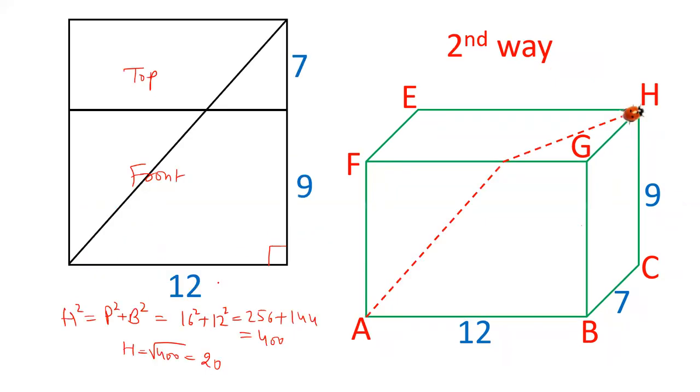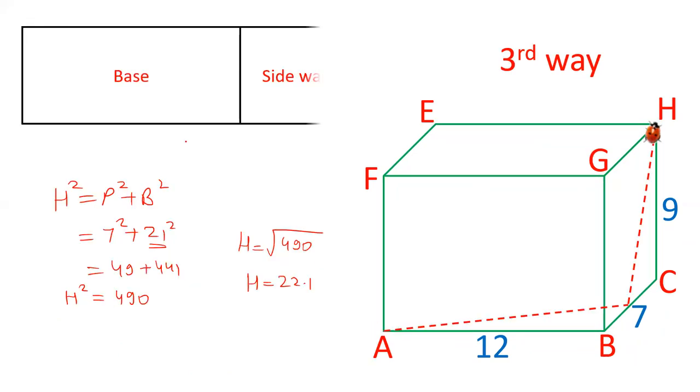So the shortest path is when it moves along this path, the sum of 7 and 9. That will be 20. So I hope friends, you like this video. Like our videos and subscribe to our channel. Thank you.